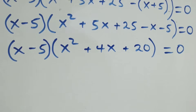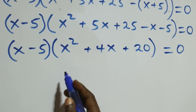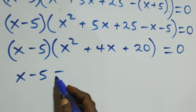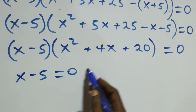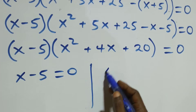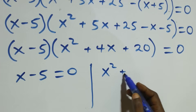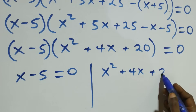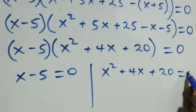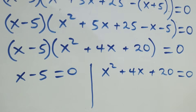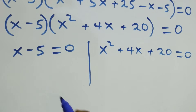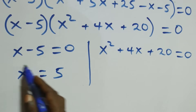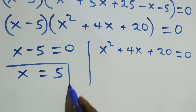From here we have two possible cases. The first one: x minus 5 equals to zero, or we have x squared plus 4x plus 20 equals to zero. Solving the first case, this implies x equals to 5, which is a real solution.